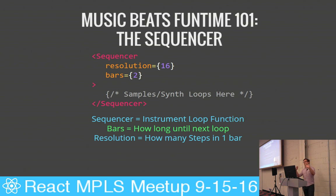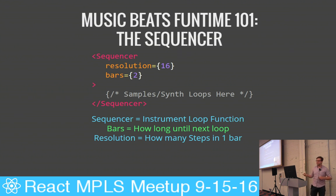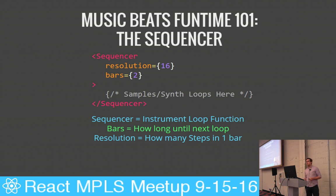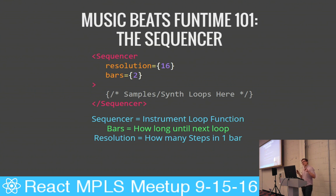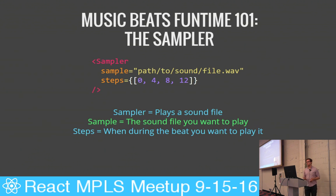So 16 is how many steps, how many notes are possible in any one bar before it loops again. Then we define bars, which is how many bars we have. In this case we have 16 steps and two bars, meaning we have 32 possible steps before it stops and loops around again. Hopefully as I go through this you'll understand better when we get to some examples.